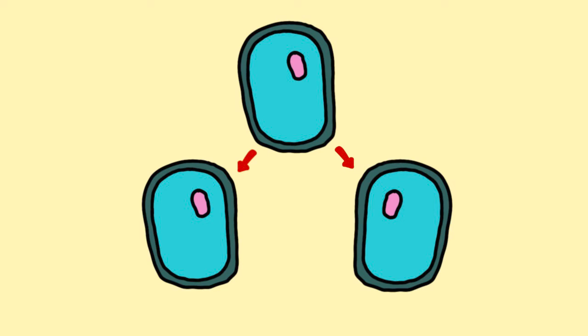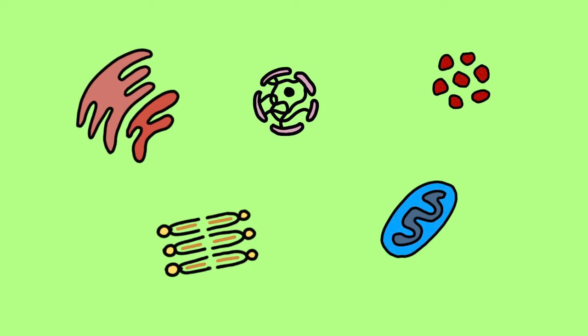All new cells can only be formed by the division of pre-existing cells. Each of these cells have several subcellular units, and different types of living organisms have different types of cells.